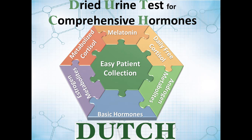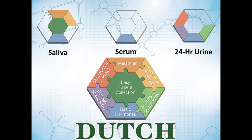You end up with a test that has all of this information in one easy test. You get your basic hormones plus metabolites of all of these various hormones, along with the daily free cortisol and melatonin, with a very easy patient collection. This dried urine test for comprehensive hormones has really become a preferable option for many providers wanting a comprehensive look at sex and adrenal hormones, and there just isn't another way to get all of this information in one easy test.